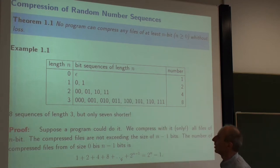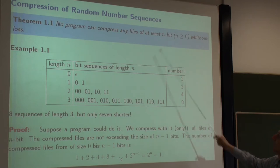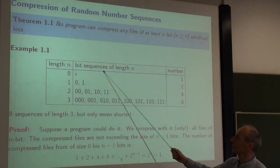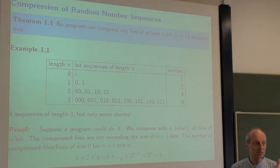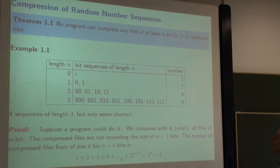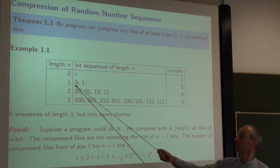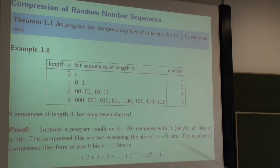The theorem says no program can compress any file of at least n bits without loss. Now we are looking at files of length n. Of length zero there is exactly one sequence — the empty file, epsilon. Of length one bit we have two files; of length two bits, two squared equals four; of length three bits, two cubed equals eight, and so on.